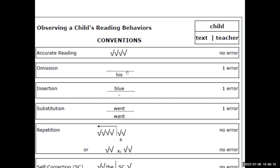When we are scoring our child, if they're reading correctly, it's just a check mark for every word they read correctly. If they leave a word out, that counts as one error. You can leave it blank, but I usually draw a line above to show that they actually omitted the word. What they should have said goes on the bottom — this is how we show they omitted it.